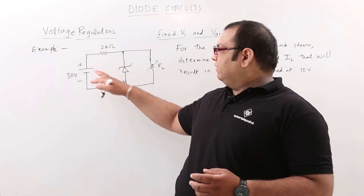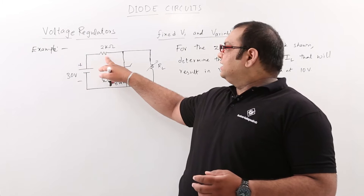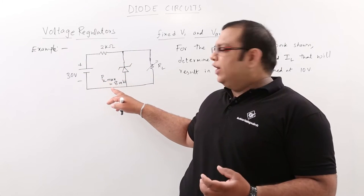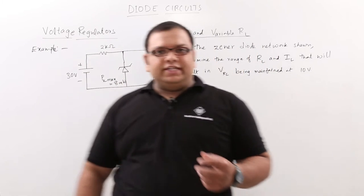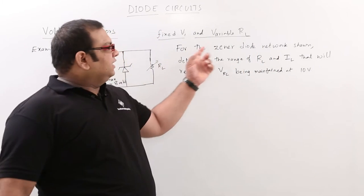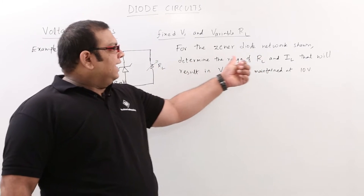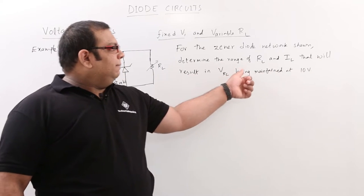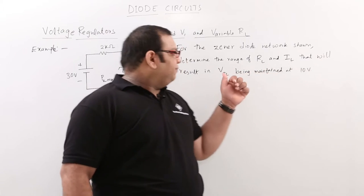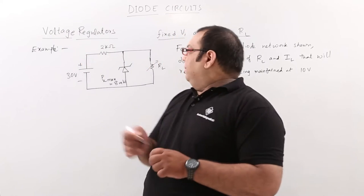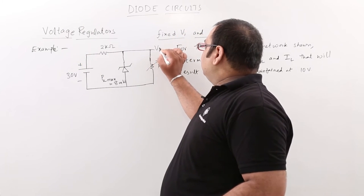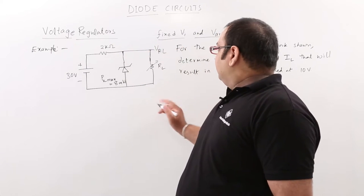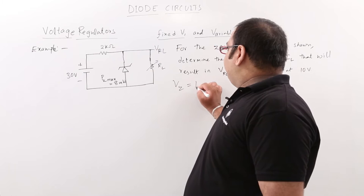This is a Zener diode network with 30 volts input and input resistance of 2 kilo ohms. The maximum power dissipation of the Zener diode PZ is 8 milliwatts, and RL is the load resistance. The question asks us to determine the range of RL and IL that will result in VRL being maintained at 10 volts. So VZ is equal to 10 volts.